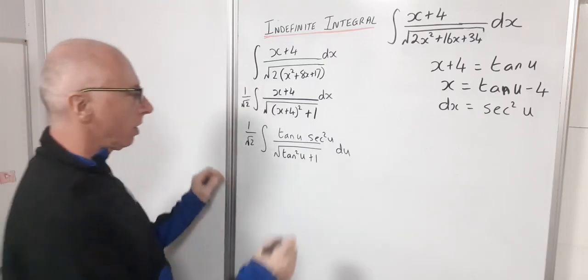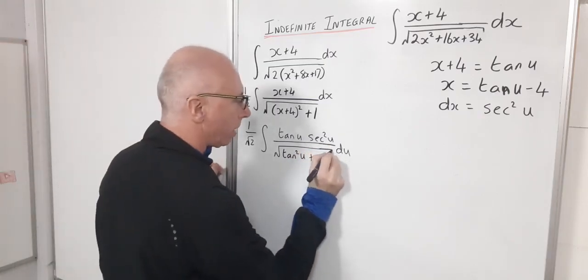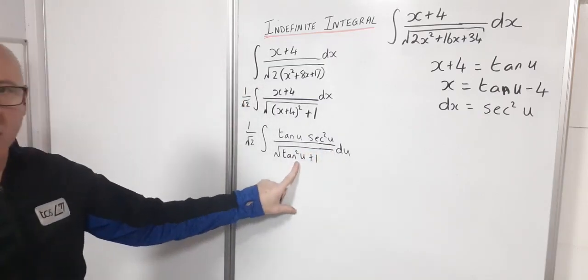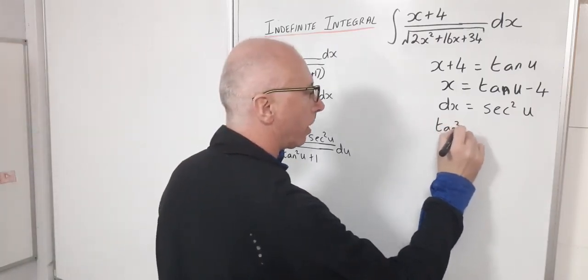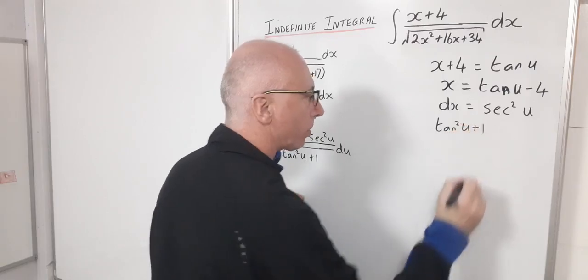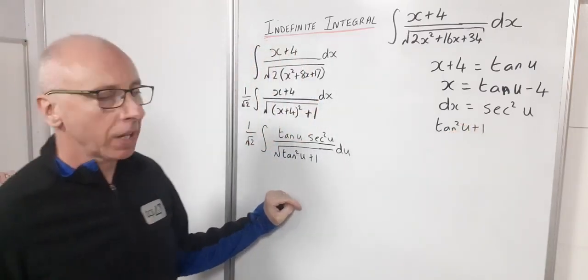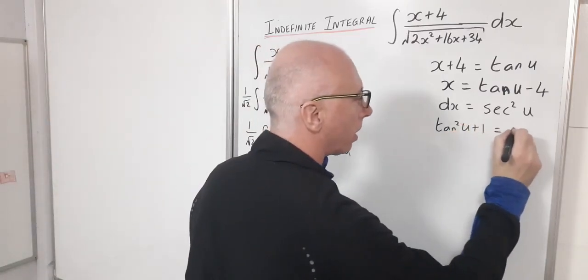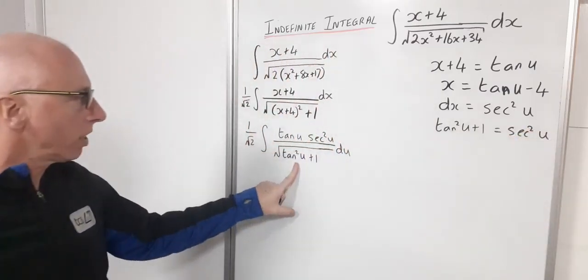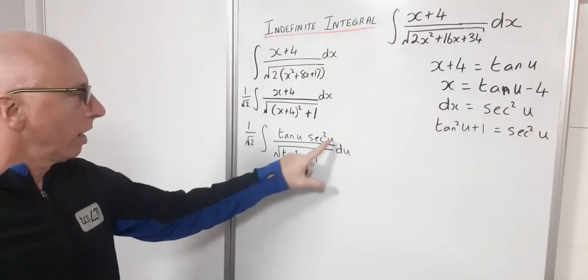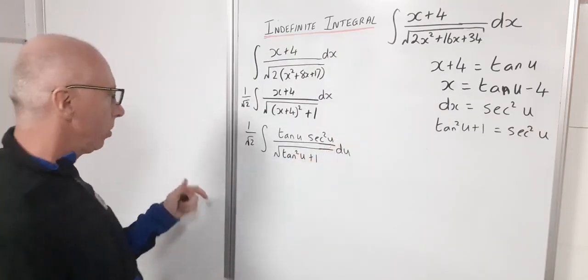Okay now things are looking good here now because now I can see the trig identity right in front of me. Tangent squared u plus 1. So let's write this trig identity in terms of u. That's going to give me secant squared of u. So now I can just change that for secant squared and I've got a secant squared in here.